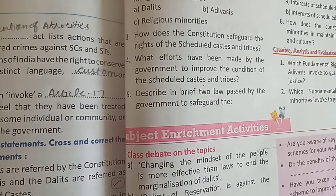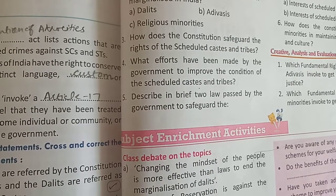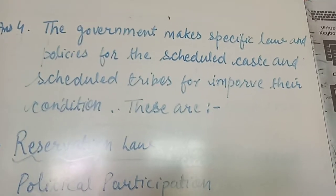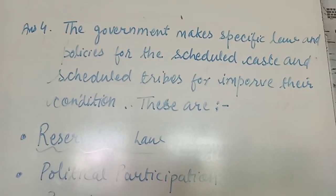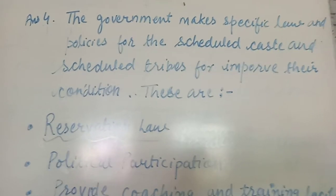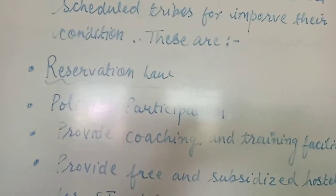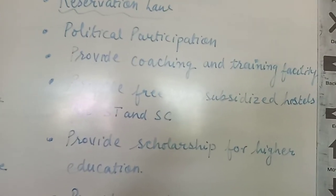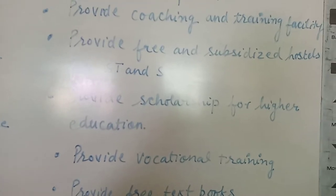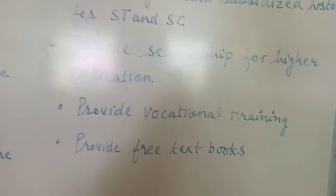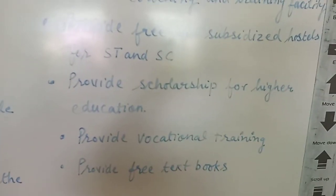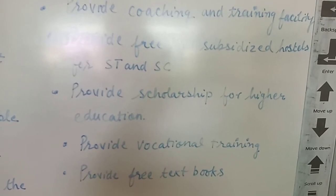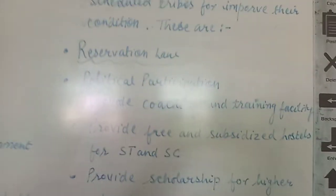The fourth question: what efforts have been made by the government to improve the condition of Scheduled Castes and Tribes? The government makes specific laws and policies for SC and ST to improve their condition. These include: reservation laws, political participation, coaching and training facilities, free and subsidized hostels for SC and ST, scholarships for higher education, vocational training, and free textbooks.